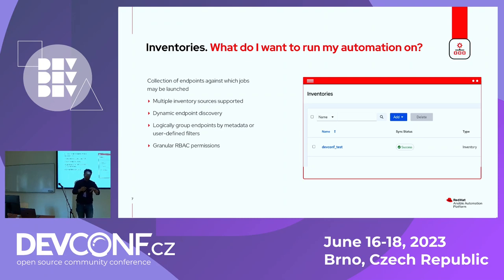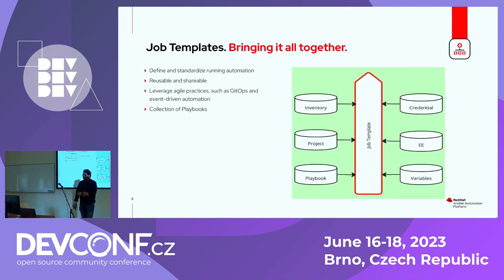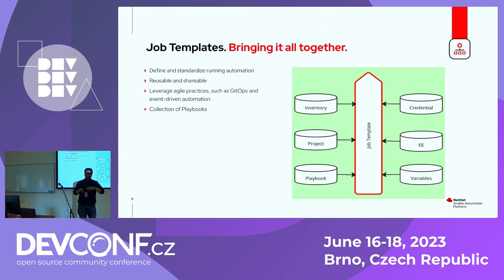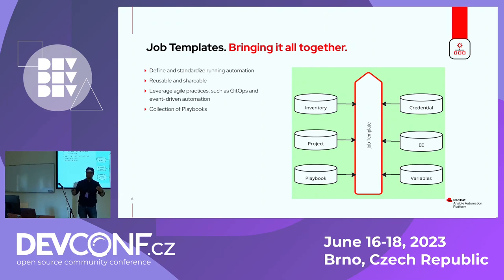For this demo, we've created a separate project based only on inventory. Job templates are like a glue — an object that brings everything together. Whatever project, playbooks, execution environments, and credentials you define, they all stick to the job template. The best part is it's reusable — you create the job template once, it runs your playbook, and you can reuse it again and again for multiple automation tasks.